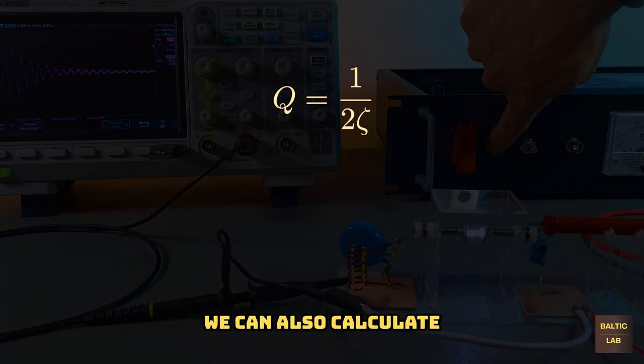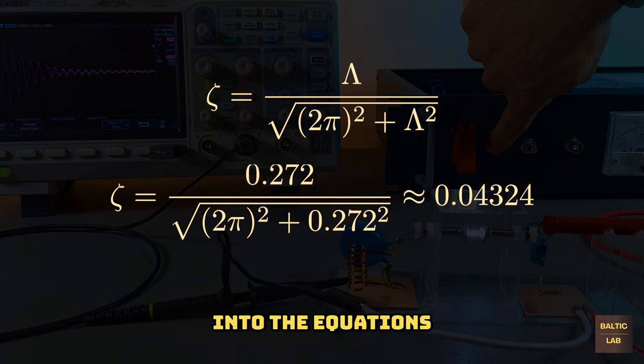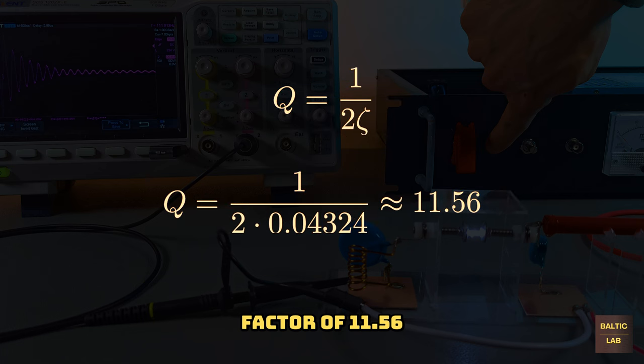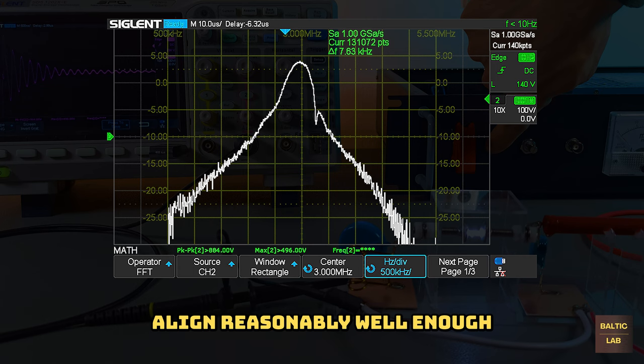Speaking of bandwidth, we can also calculate the quality factor Q by first calculating the damping ratio zeta from the logarithmic decrement lambda which we previously calculated. Plugging all known values into the equations yields a numerical Q-factor of 11.56. At a frequency of 3 megahertz this corresponds to a half power bandwidth of approximately 260 kilohertz, which seems to align reasonably well enough with the FFT spectrum.